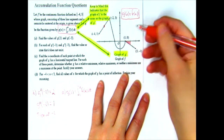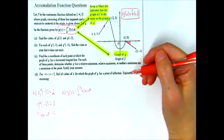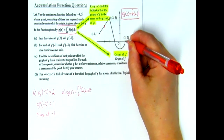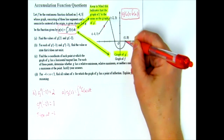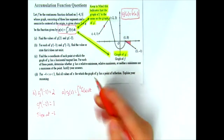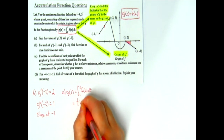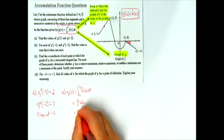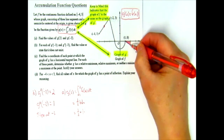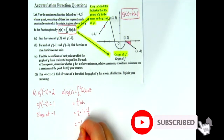Notice that the triangle is below the x-axis, so it will be a negative area. The height is negative one-half, so plugging into the formula: one-half times base of one times height of negative one-half gives a final answer of negative one-fourth for g of two.